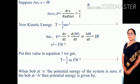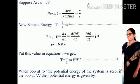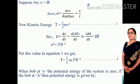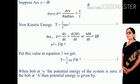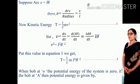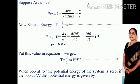Suppose arc s equals L theta, then theta equals s upon L. When the pendulum is in motion, there is kinetic energy. T equals one half m v squared. But v equals ds upon dt, and s equals L theta, so that d(L theta) by dt equals L d theta upon dt.